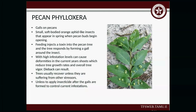Pecan phylloxera — these are galls on pecans, similar to the oak galls. An insect lays its larvae and the plant forms around it. The feeding injects a toxin into the pecan tree, and the tree responds by forming a gall around the insect. With high infestation levels, it can cause deformities in current-year shoots, reducing the tree's growth rate and overall vigor. Trees usually recover unless they're suffering from other stressors. To address it, minimize stressors on the tree and you'll start seeing recovery in the following years.